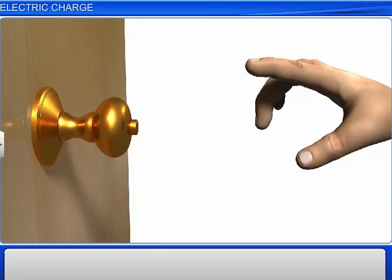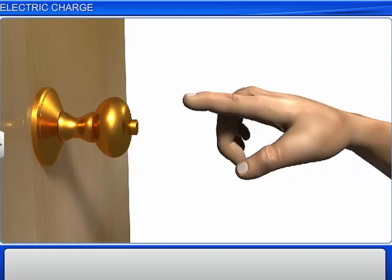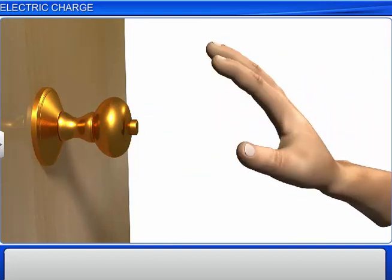Sometimes, if you touch a metallic doorknob or any metallic object, you might experience a mild shock. This is because the metallic object was charged, or in other words, it carried an electric charge.